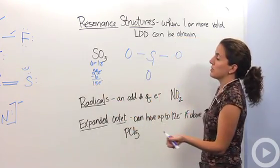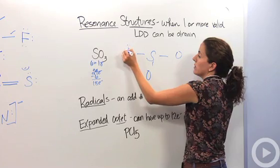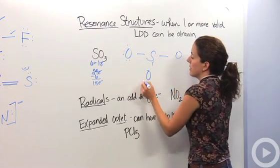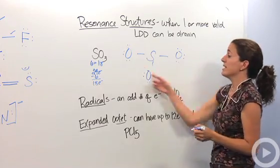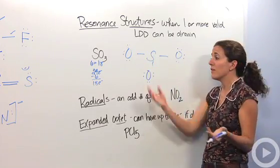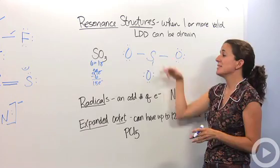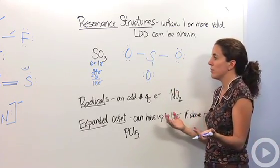Okay, so they're going to go around oxygen because they're the most electronegative. Two, four, six, eight, ten, twelve, fourteen, sixteen, eighteen. Fantastic. All these oxygens are totally happy. They have eight electrons around. They're fine. Poor sulfur only has six. So what are we going to do?